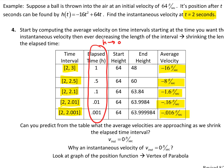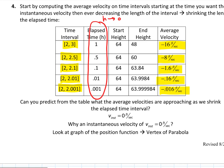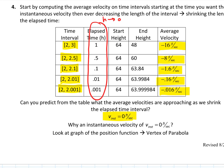Those average velocities are approaching zero. The instantaneous velocity at two seconds is zero feet per second. We could write that as: the limit of the average velocities as elapsed time H goes to zero equals the instantaneous velocity — which appears to be zero feet per second.